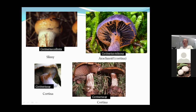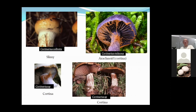Cortinarius, which is a huge group in Colorado, has bright rusty brown spores. Many are bright blue colors, like Cortinarius violaceus. There are hundreds of species just in our state and thousands worldwide; they're very difficult to identify to species, and we definitely recommend they not be eaten, at least in the United States.